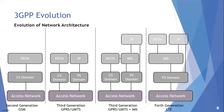In enhanced 3G networks, I can connect to IMS networks, and I have a core of CS and PS domains. The IMS is connected to PS. CS can be connected to the public switched telephone network, IMS can go to IP, or data can go directly from the PS domain to IP — which is the internet.